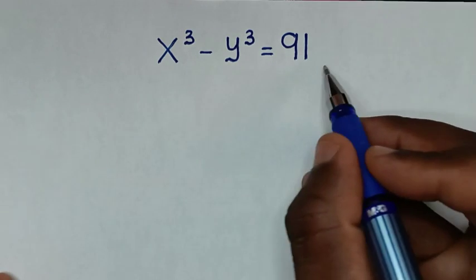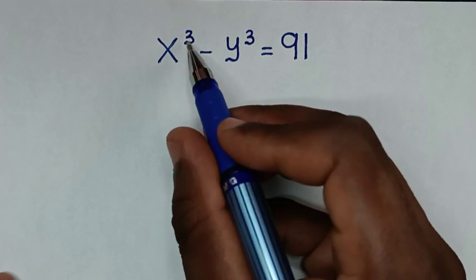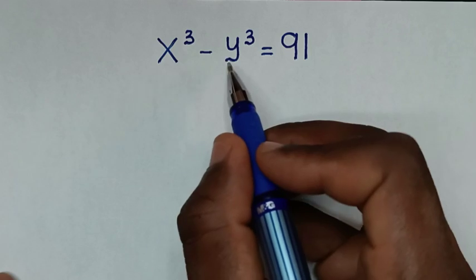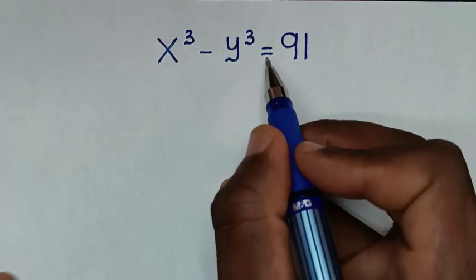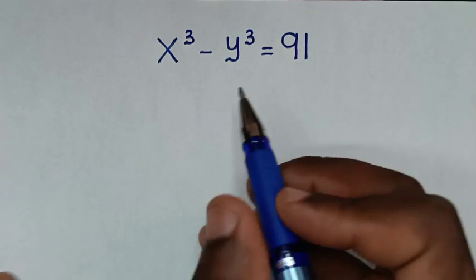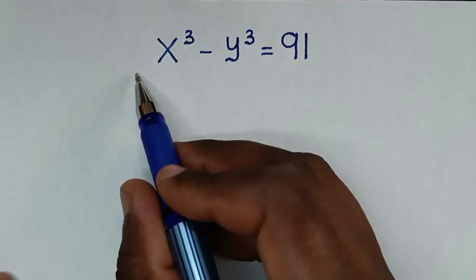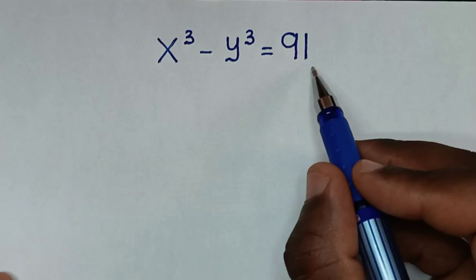You are welcome to solve this math problem: x power 3 minus y power 3 is equal to 91, to find the values of x and y from this equation.